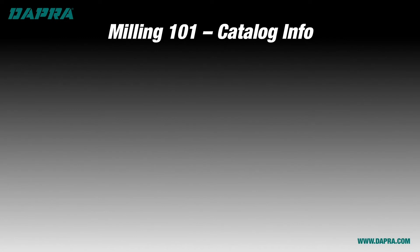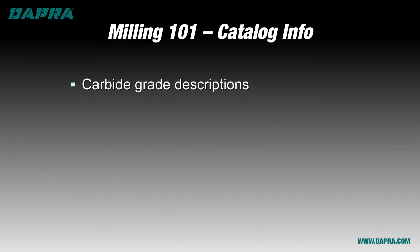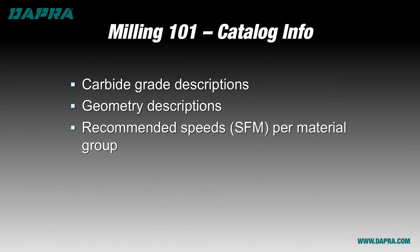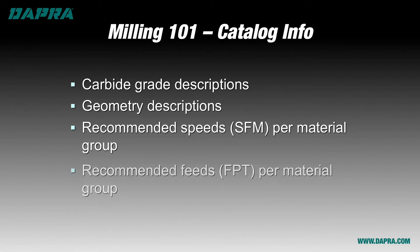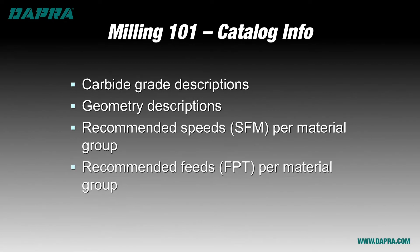When you refer to your cutting tool catalog for help in setting up your milling application, you're generally given these pieces of information: your carbide grade descriptions, your geometry descriptions, recommended cutting speeds in surface feed per minute, and recommended feed rates in feed per tooth. Each of these is very important and necessary to create a good milling program.